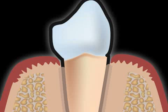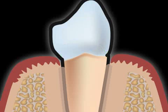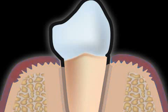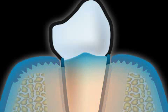Sulcus is the anatomical term for a particular gum area. In the animation you see the cross section of a tooth. You can recognize bone, the tooth root, the root skin, and the gums. These structures are called a periodontium.